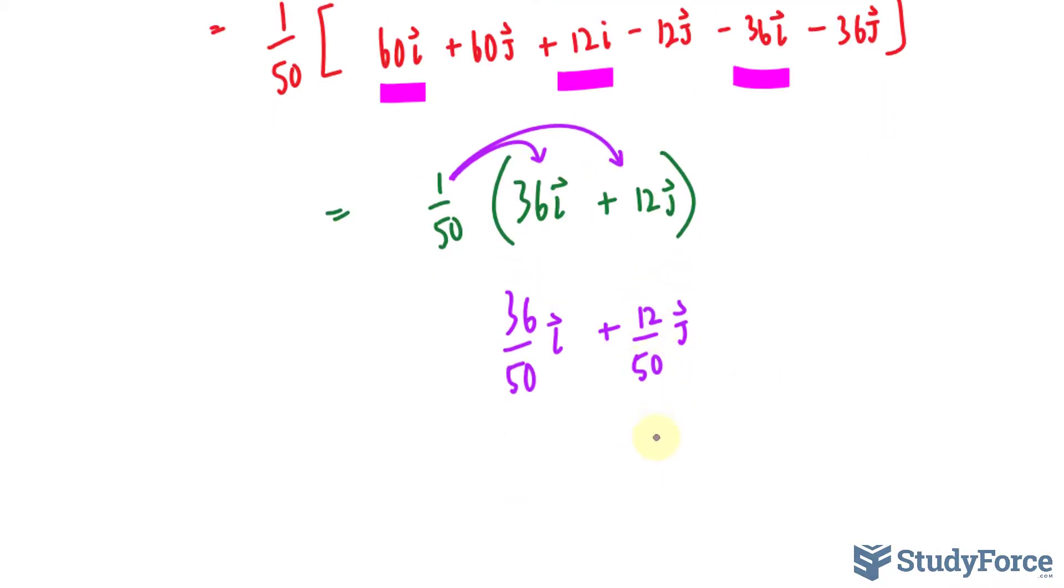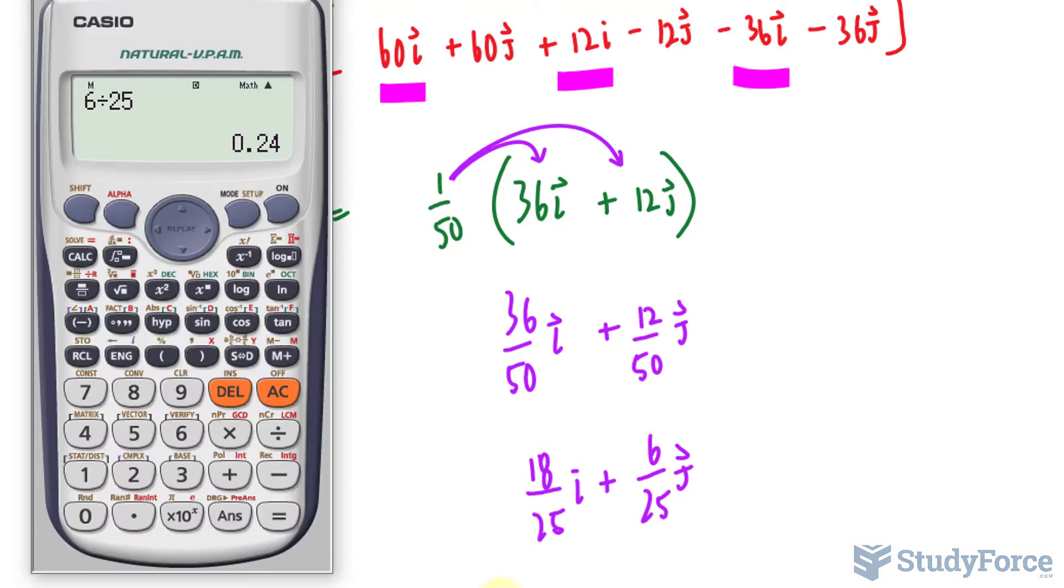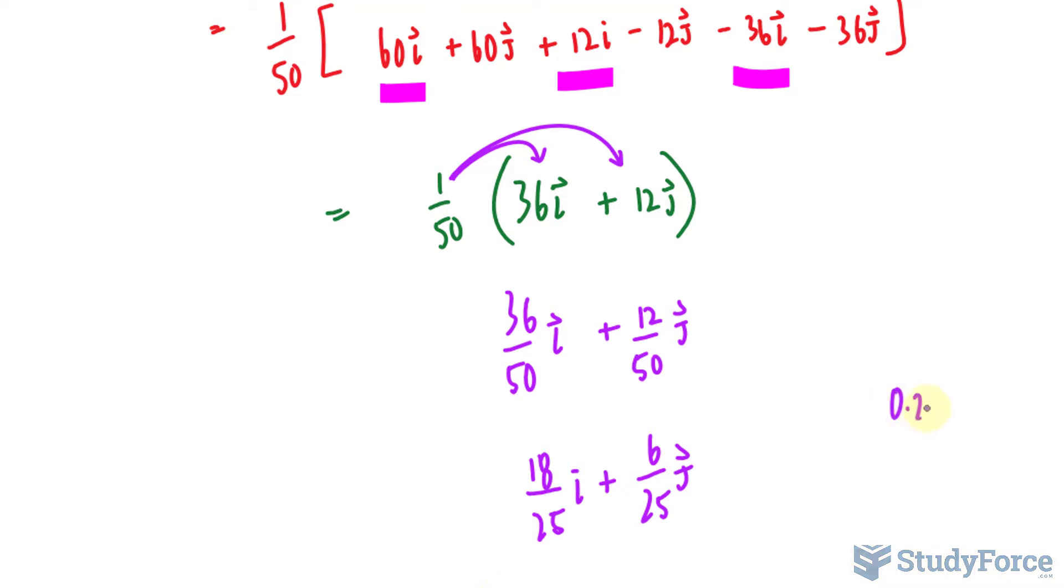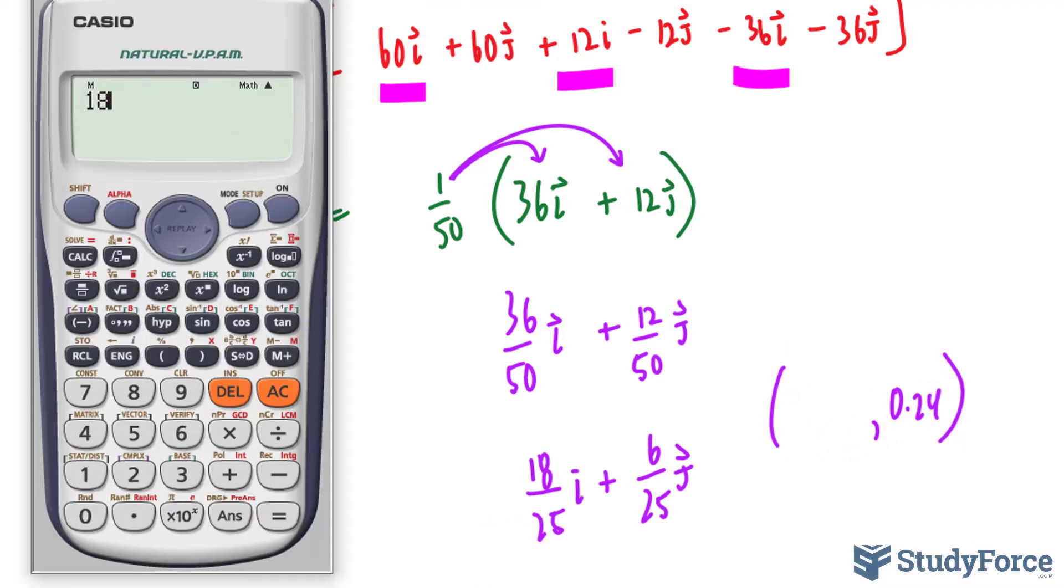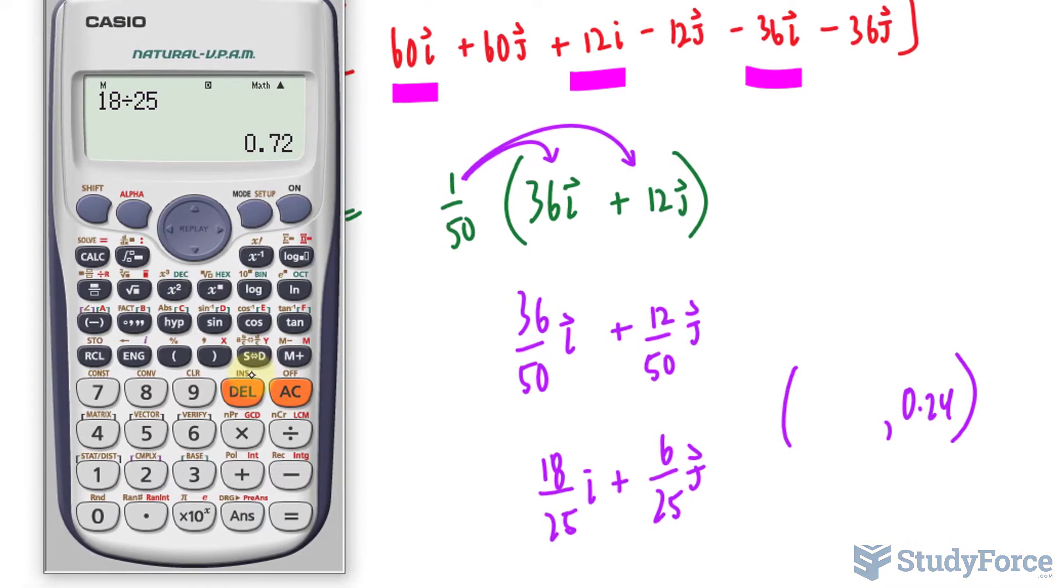You have to reduce these, so that reduces down to 6 over 25, and this reduces down to 18 over 25i. You can write this down as a point, and feel free to change it into decimal form. So you should have a point at 0.24 for your y-coordinate, and for your x-coordinate, 18 over 25 makes 0.72.